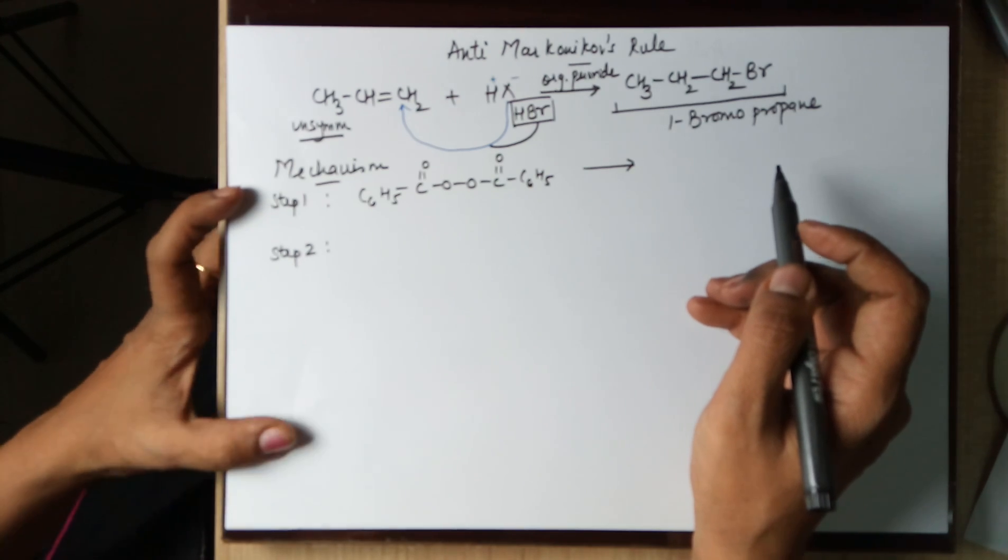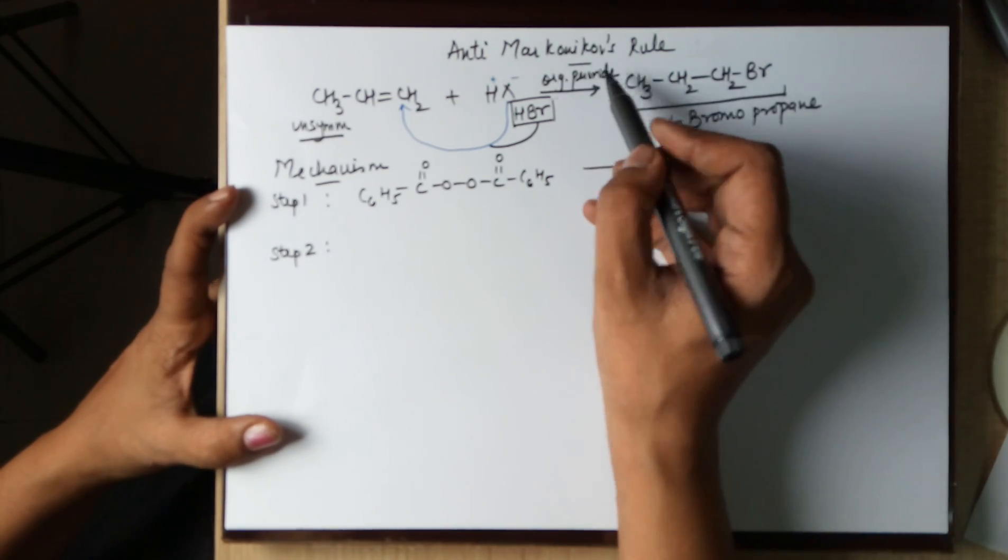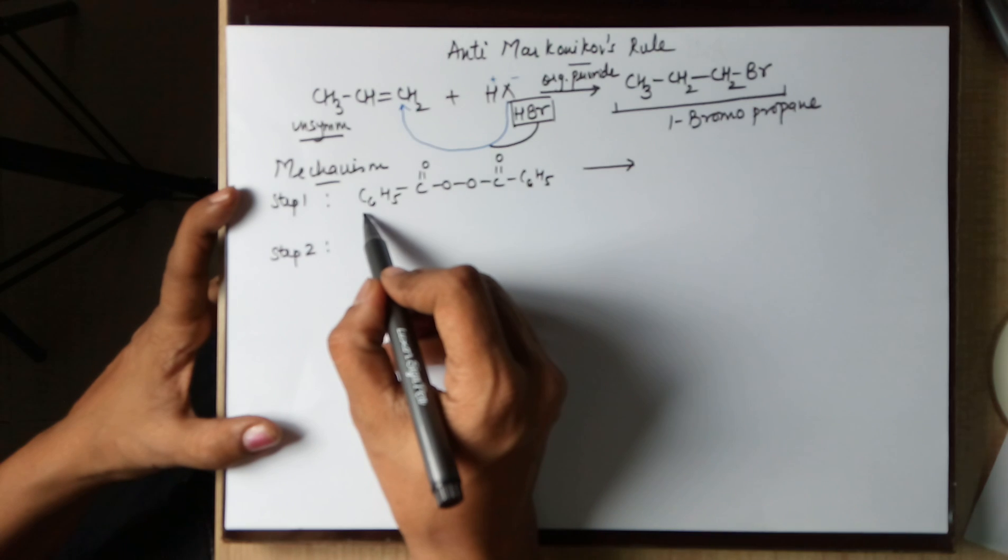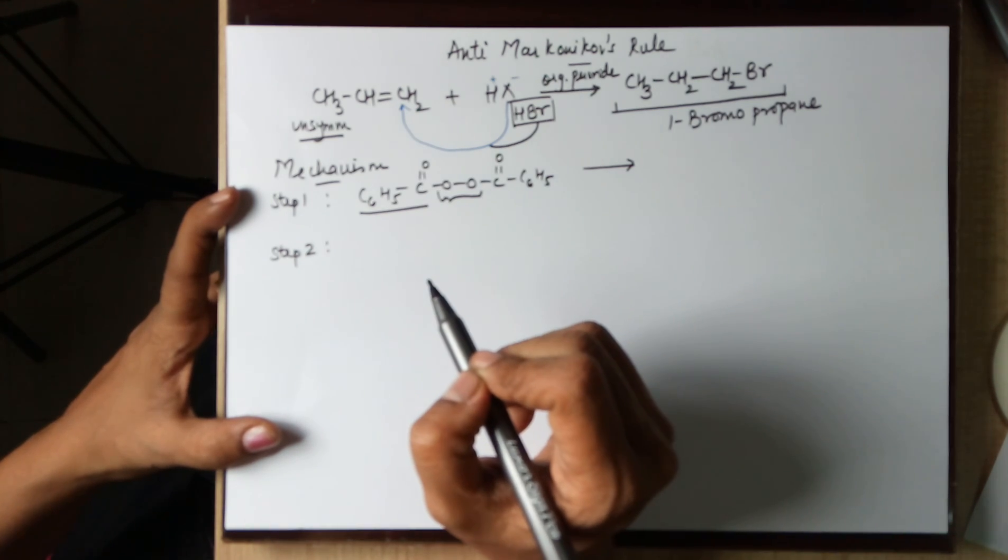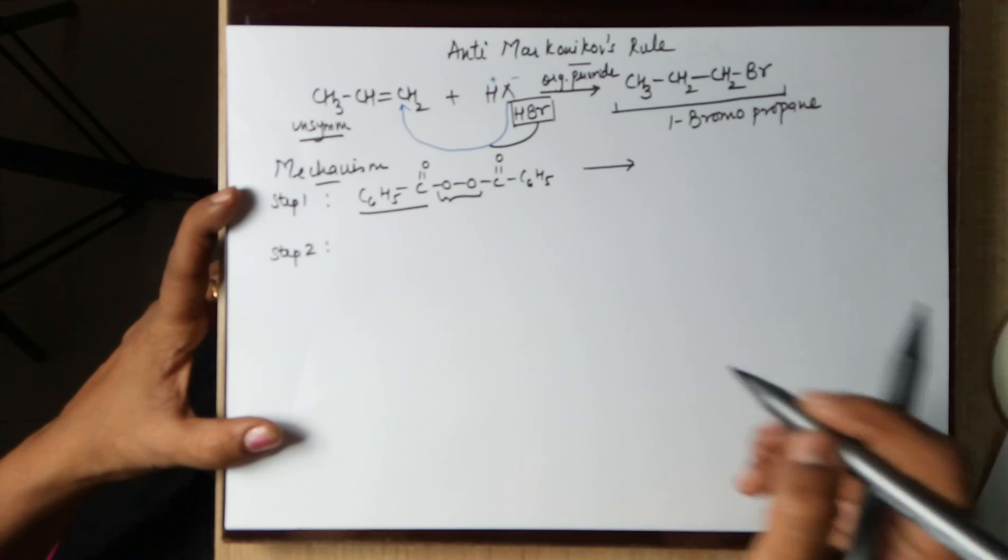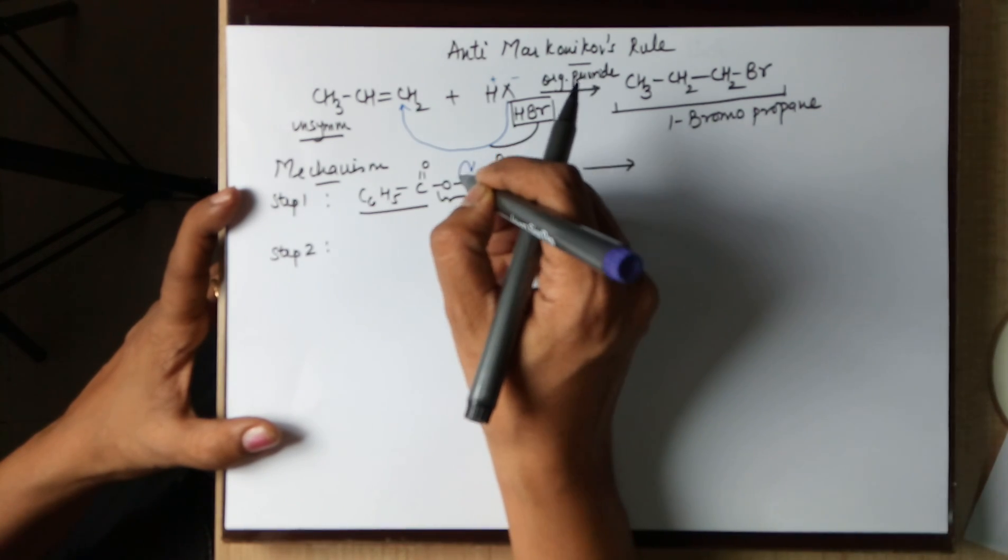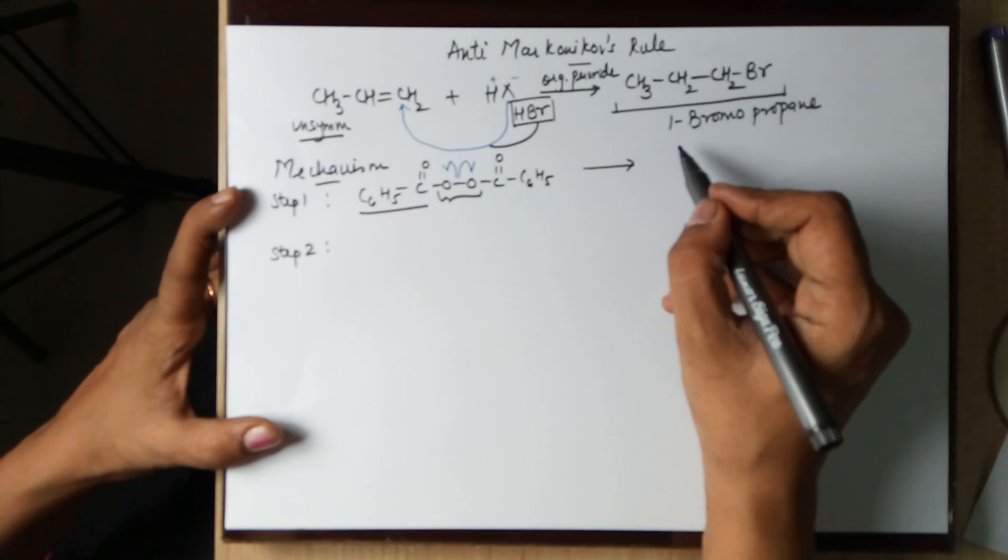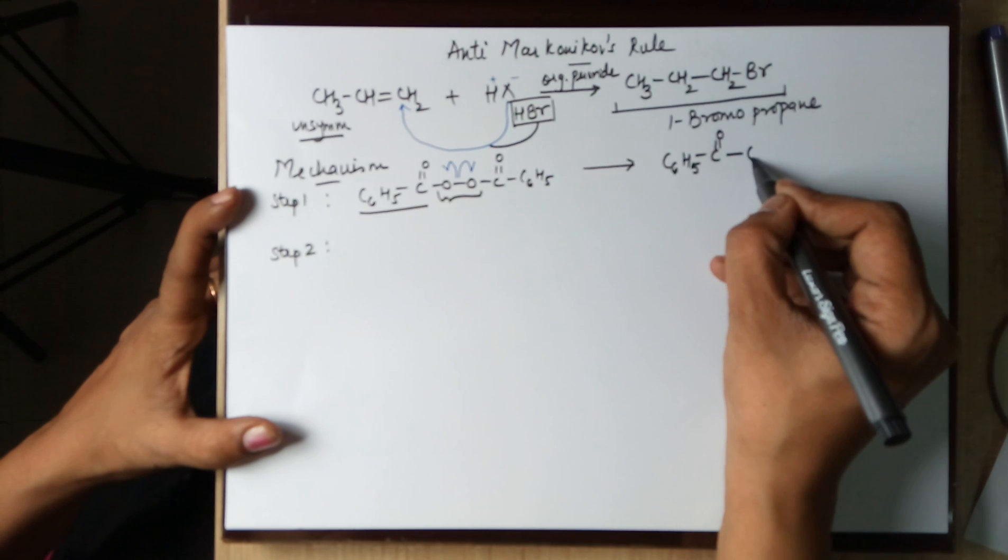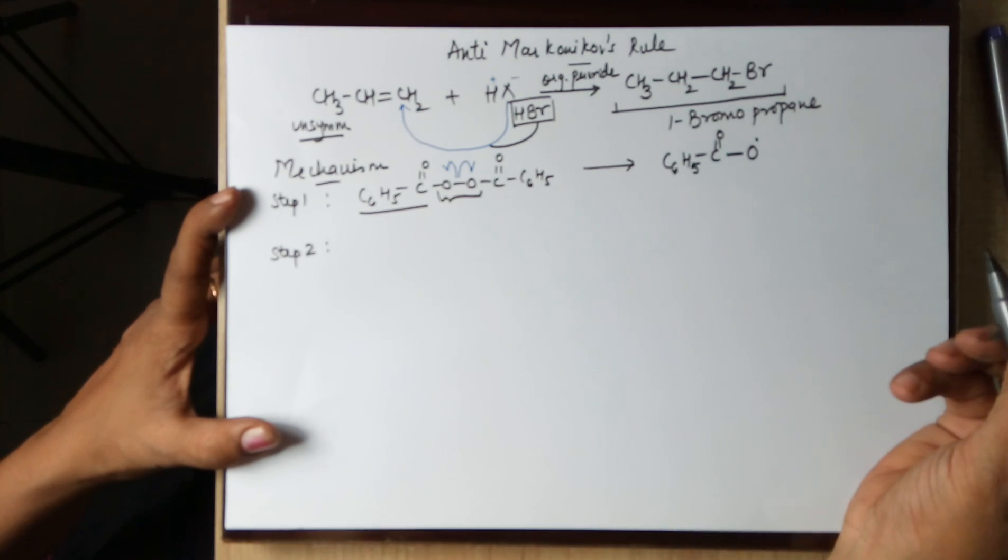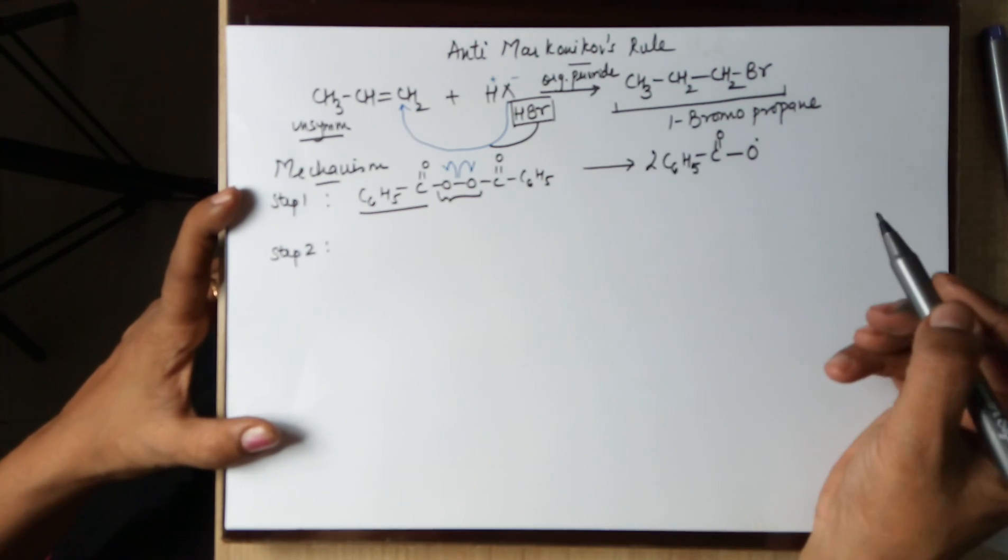Moving on to the mechanism. Organic peroxide commonly used is benzoyl peroxide. This is the benzoyl part and this is the peroxide part which is the weak bond. This peroxide easily cleaves according to homolytic cleavage leading to C6H5CO. The bond broken here and you generate a free radical. You will actually generate two such molecules.